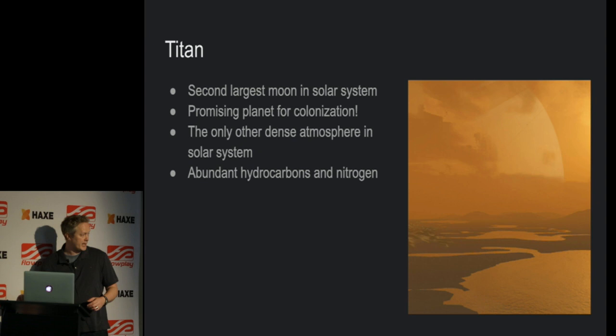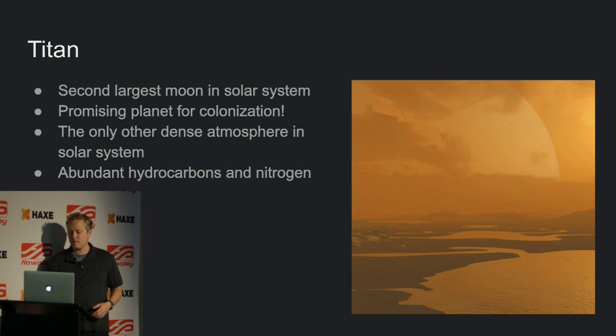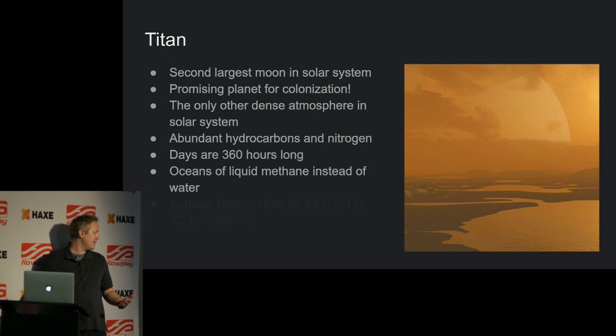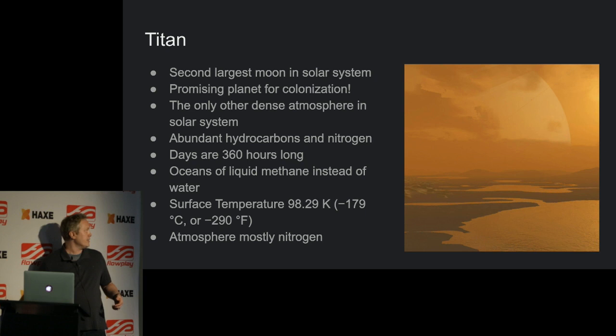This is excellent sci-fi fodder. People always say this is the next place we should colonize — it's got all these nice attributes that are rare. However, when you get into the drawbacks: the days are 360 hours long, there are oceans of liquid methane instead of water, and the surface temperature is a brisk negative 290. There are some severe drawbacks, but it's still compatible at least on a galactic scale. Also, the atmosphere is mostly nitrogen — we'll need to solve that too, but no big deal.